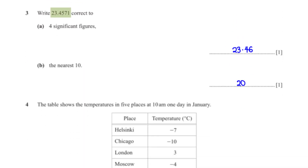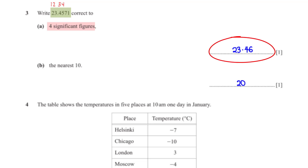Write 23.4571 correct to 4 significant figures. From the left, we count 4 numbers, and the next number after the 4th is 7. Since 7 is 5 or more, we add 1 to the number 5, and we are left with 23.46.